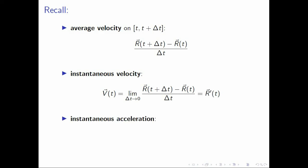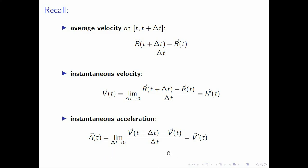Finally, we have the instantaneous acceleration, and this is given by the limit of this ratio as delta t goes to zero. And this limit is just v prime of t. And since v of t equals r prime of t, we also have a of t equals r double prime of t.